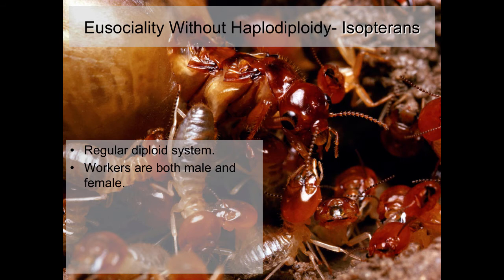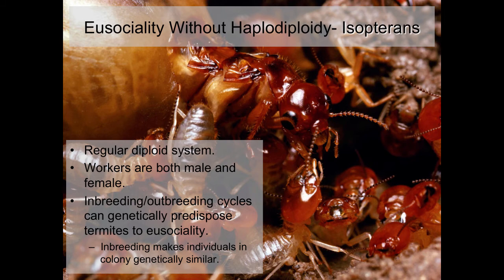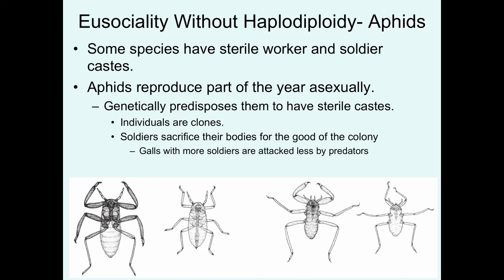An example is the Isoptera — the termites — which have a regular diploid system of genetics. In a termite mound, workers are both male and female, very different from the Hymenoptera. There are also aspects of termite breeding that genetically predispose them to eusociality: termites go through inbreeding and outbreeding cycles that can increase genetic similarity within colonies, increasing the potential of inclusive fitness gains through the indirect route despite not all individuals being capable of gaining fitness through the direct route.